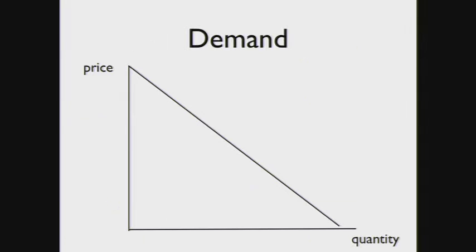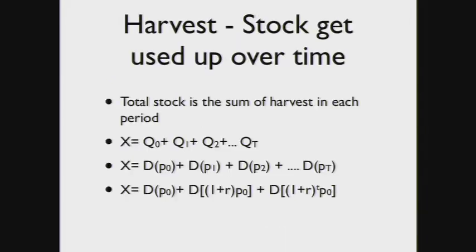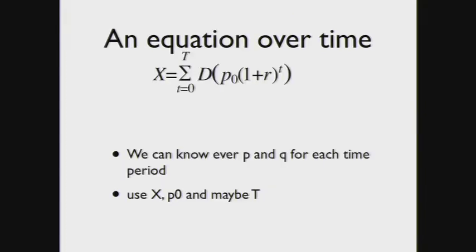The final quadrant has quantity on the other axis. There's a total stock of resources, and the resource owner knows how much is in the mine. The total stock equals the sum of the amount harvested in each time period. The quantity harvested in each time period is related to the price in that period. The quantity at time zero corresponds to the price at time zero. These quantities can be related to prices in each future period. All these prices can be expressed as functions of the interest rate, the starting price, and the time period. They're all linked through the same equation. The stock is the sum of the demand in each time period. Demand is a function of the starting price and interest rate over time.